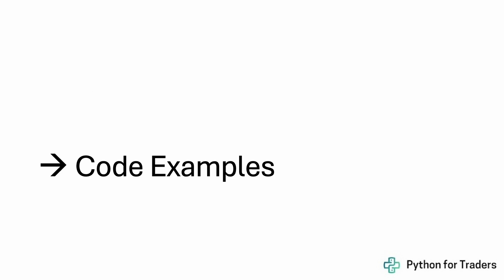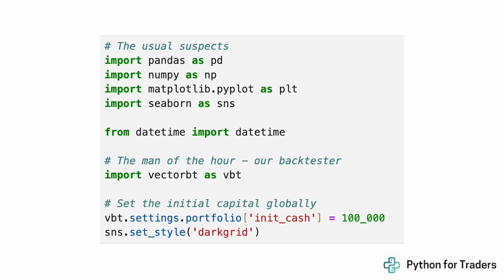Let's get into some code examples. First, we'll set up our strategy with our imports. We'll use pandas, numpy, matplotlib, and seaborn for visualizations. The main library is VectorBT, which we import as vbt. Here we're going to initialize the portfolio to have $100,000 in initial cash, and then set the style for our plots.